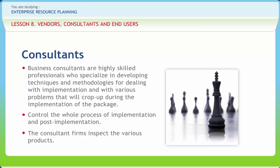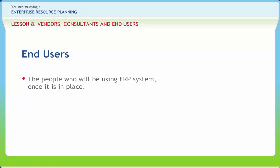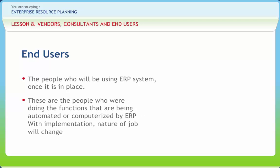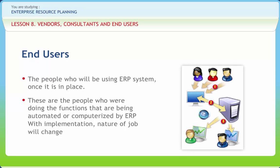Consultants need to position themselves to balance their loyalty to the client and the project. End users are the people who will be using the ERP system once it is in place — the people who were doing the functions that are being automated or computerized by ERP. With implementation, the nature of the job will change. It is human nature to resist change, and ERP implementation changes the whole business on a very massive scale. Employees will fear that the system will replace existing jobs, and job responsibilities undergo drastic alterations.